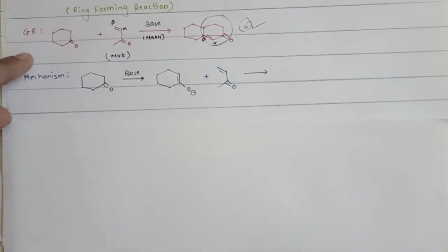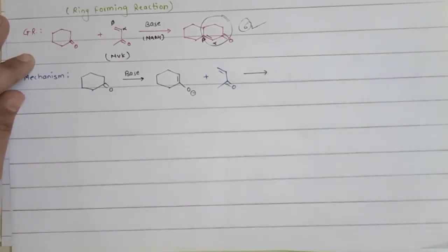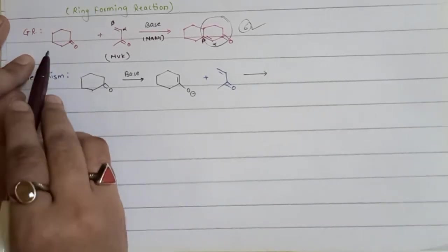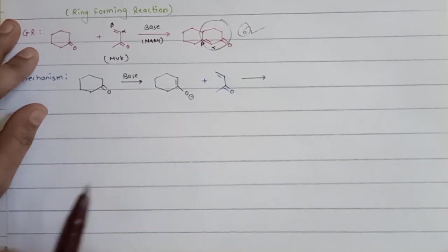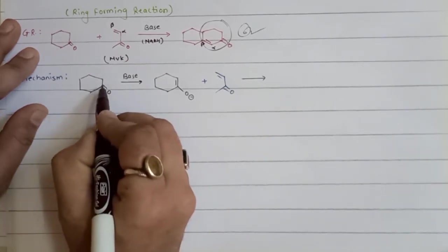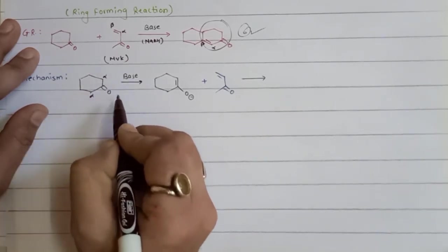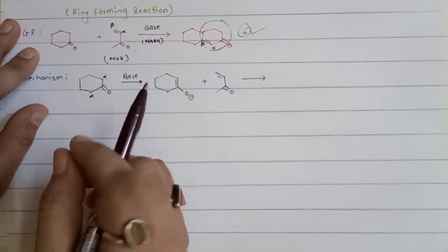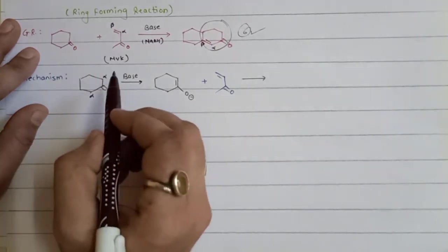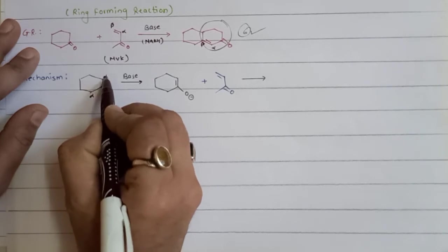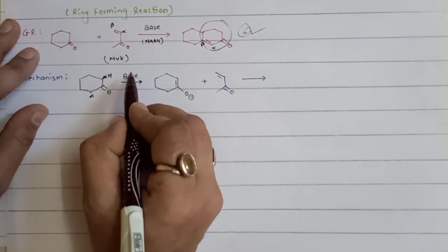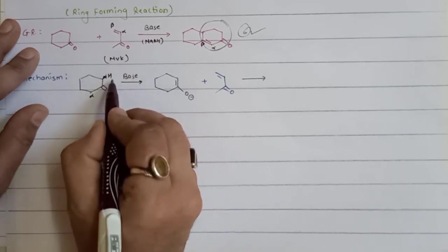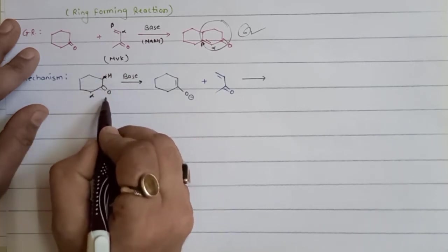First of all we start with cyclohexanone as the first reactant, which will interact with the base. The role of the base is to abstract the proton. Looking at the ketone, here is the alpha carbon on both sides - both are the same. The hydrogen attached at the alpha position will be abstracted by the base.